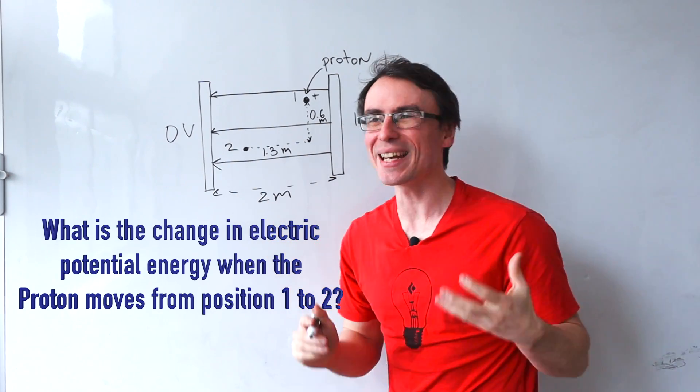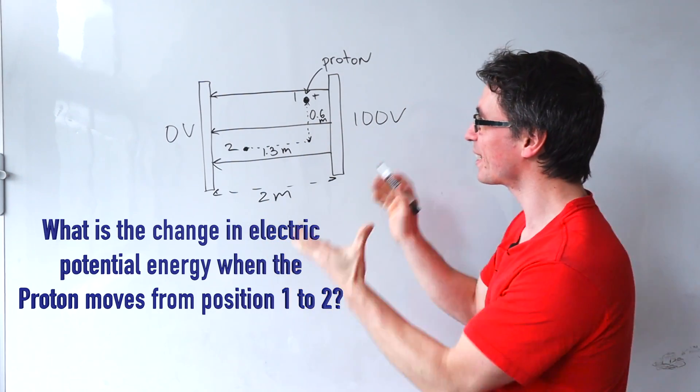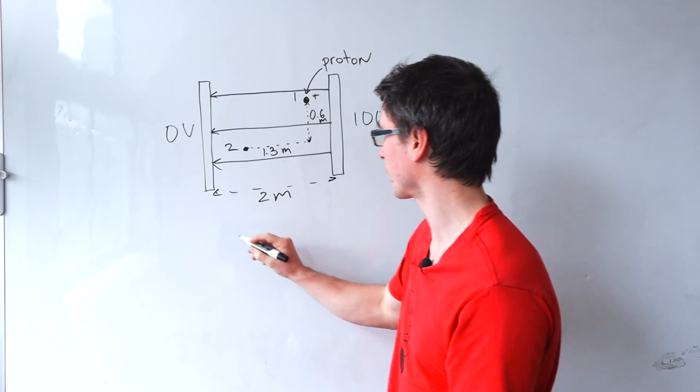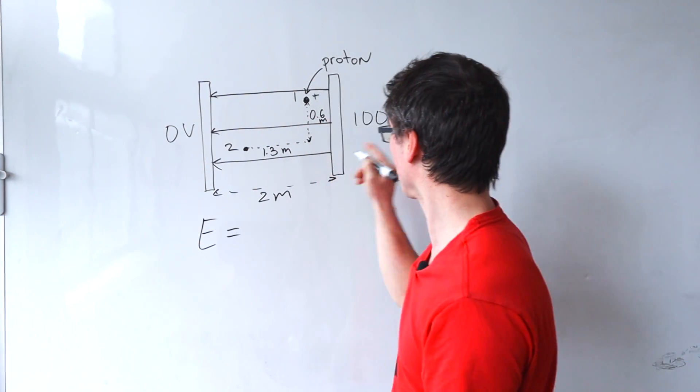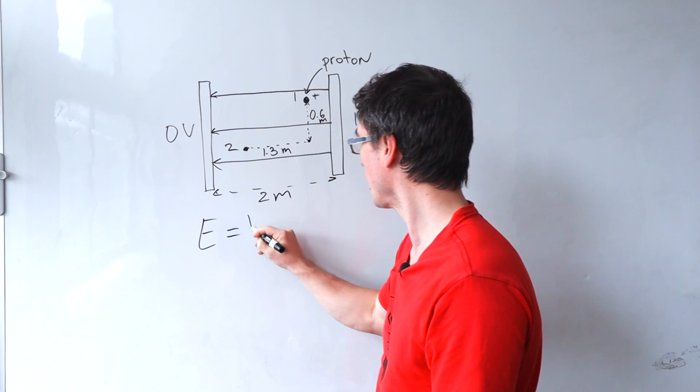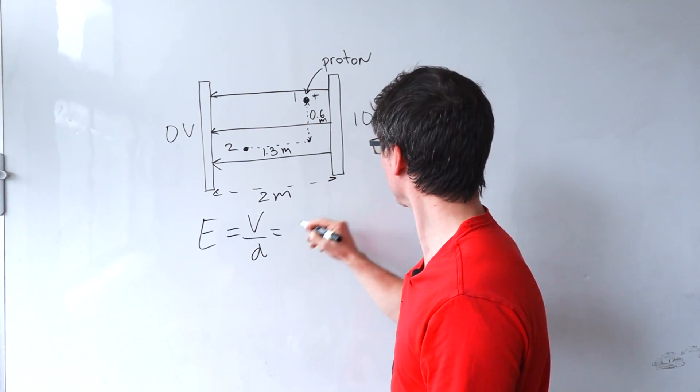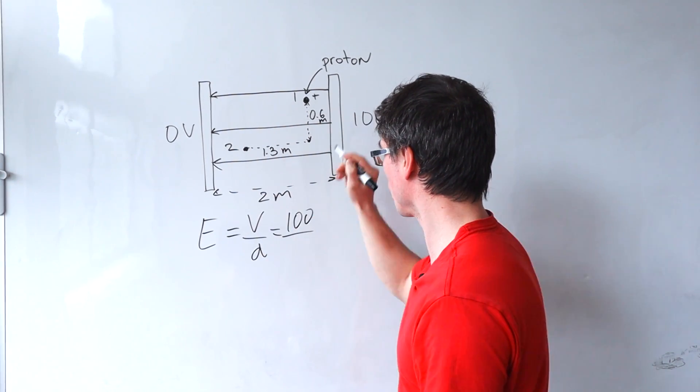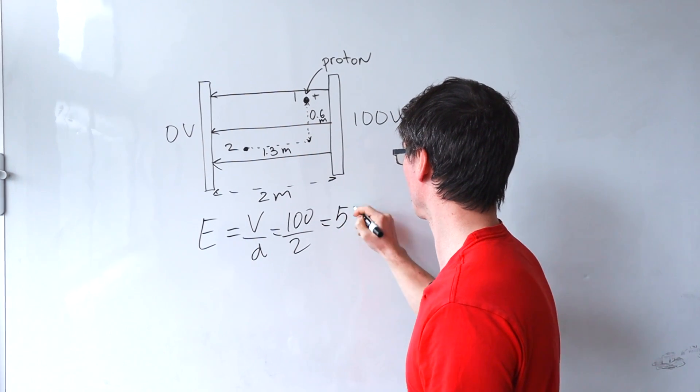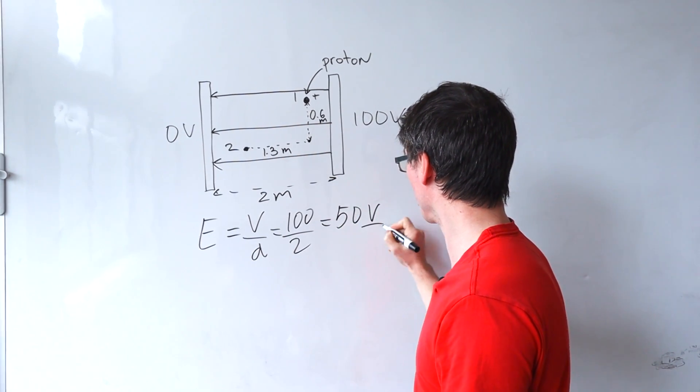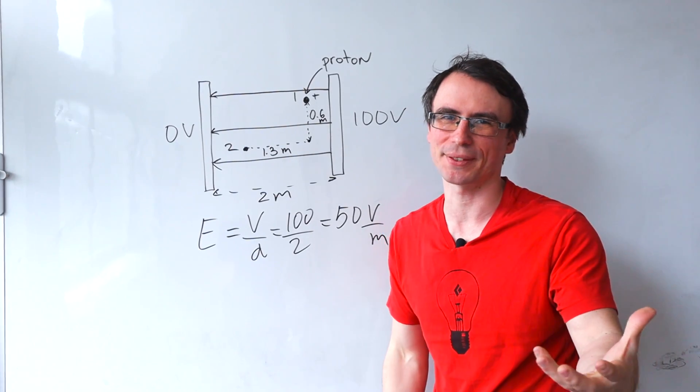My first step in answering this question is to simply calculate my electric field strength. So I'm going to say that because the field is uniform that E is equal to V over D which is just 100 over 2 which is 50 volts per meter. And this is going to be really significant.